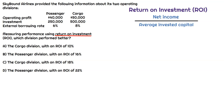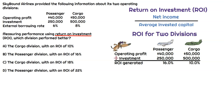When looking at what we need here, we just need net income, or operating profit as they give us here, and then the investment, which can also be average invested capital. So take what the question gives us. Ultimately, we just need to divide operating profit by investment for each division. Let's go ahead and calculate the ROI for each division.